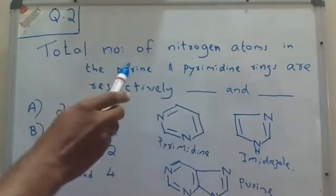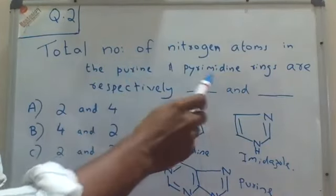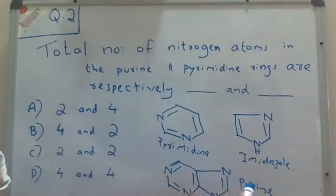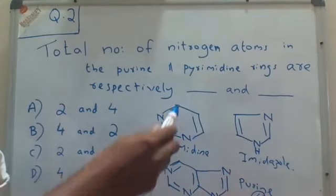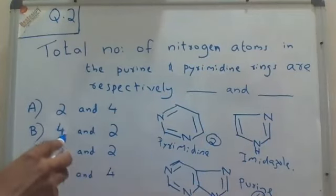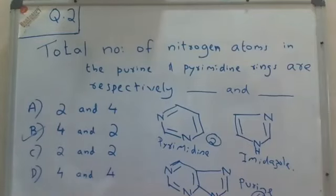So let's go back to the question — total number of nitrogen atoms in the purine and pyrimidine respectively. This is a purine, so we can count the nitrogen atoms: one, two, three, four — there are four nitrogen atoms in purine. And in pyrimidine, there are two nitrogen atoms. So the answer will be four and two. Hope you understood this question. Thank you, and we'll meet with another question in the next class.